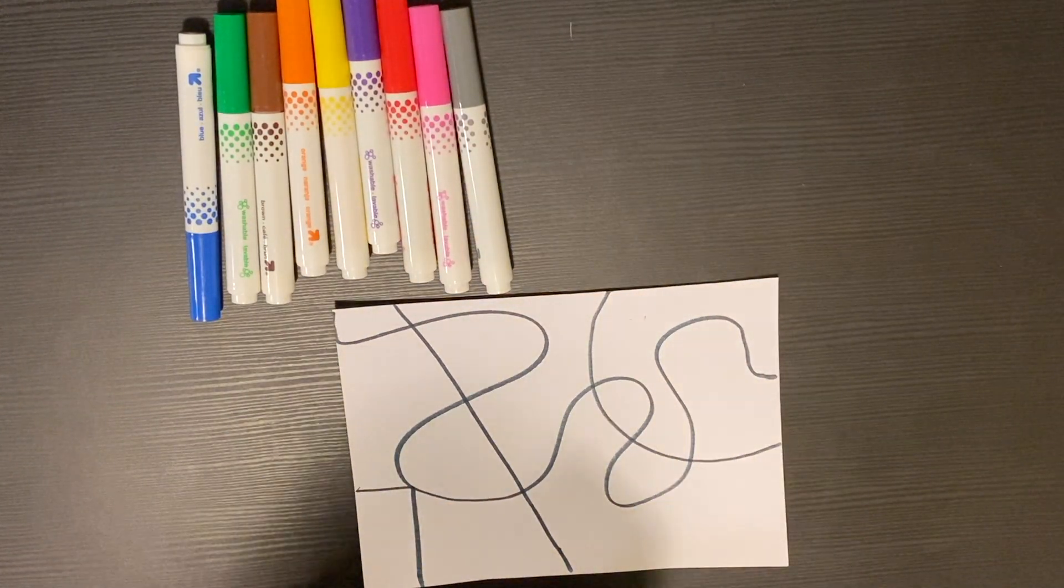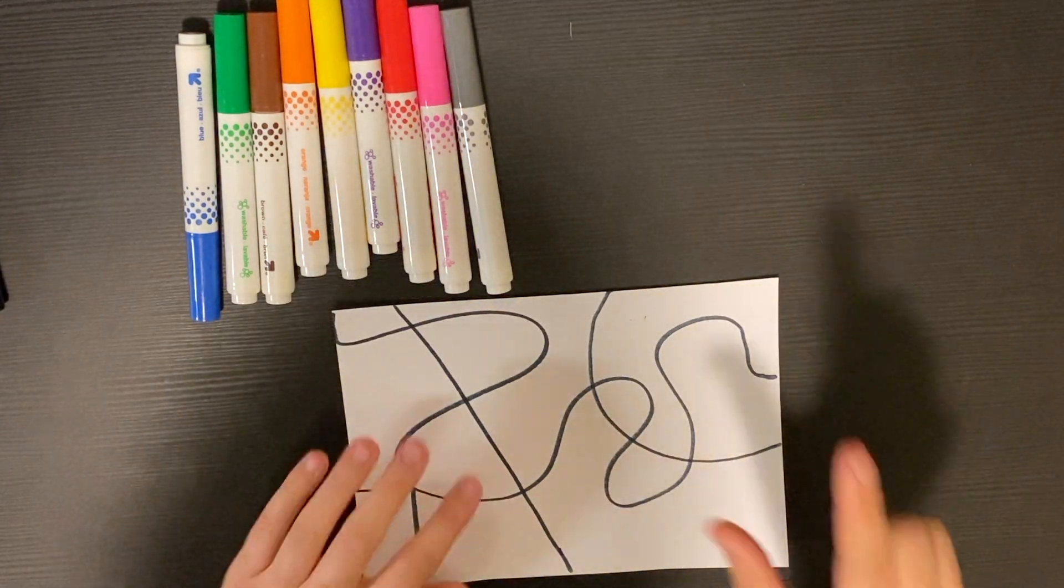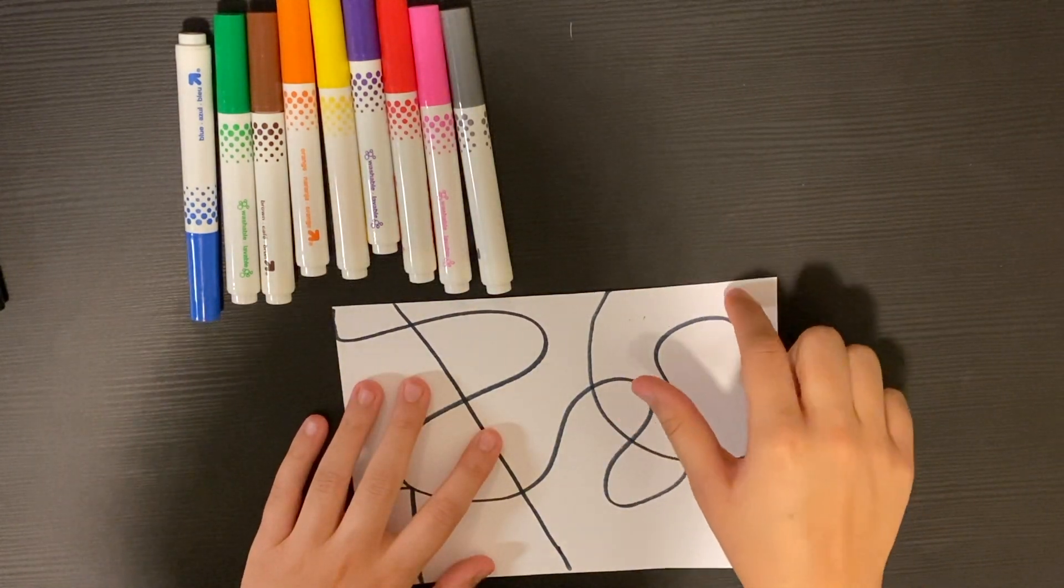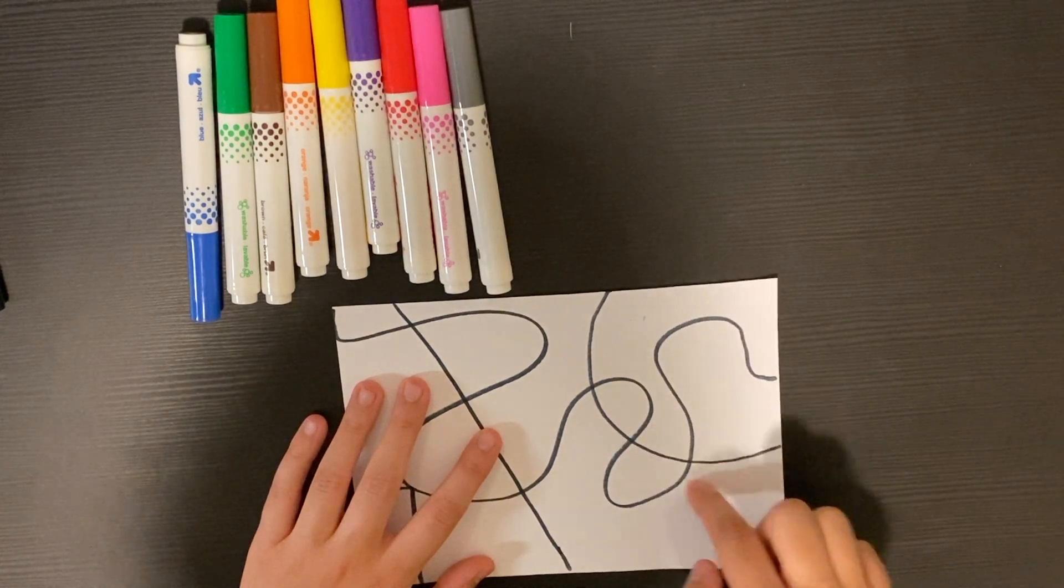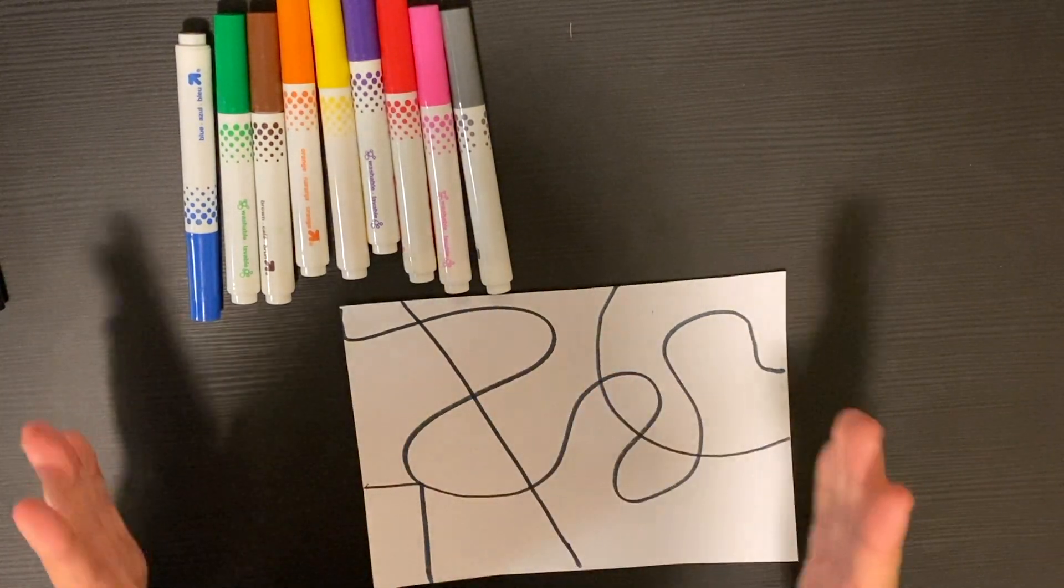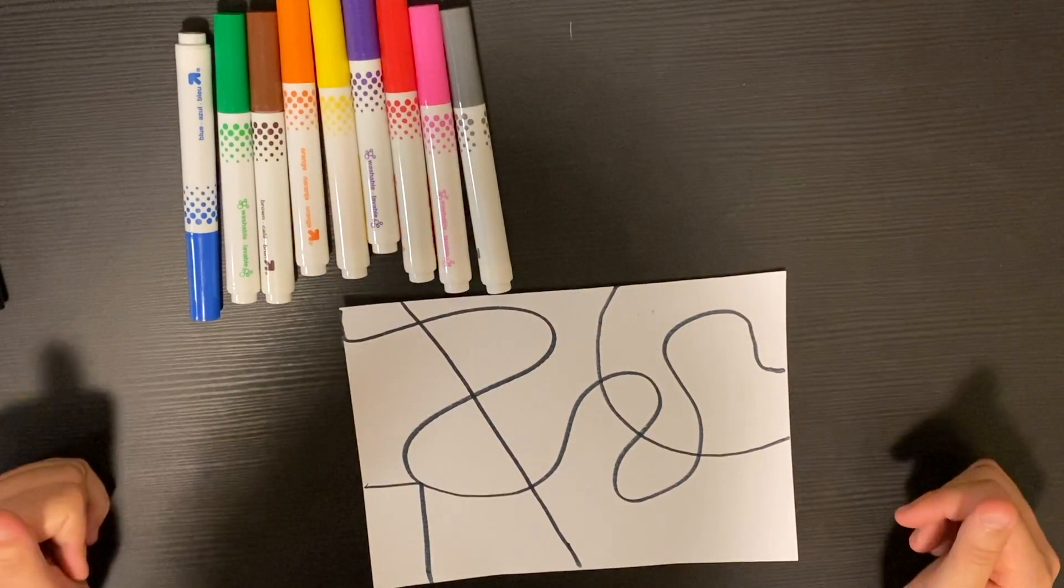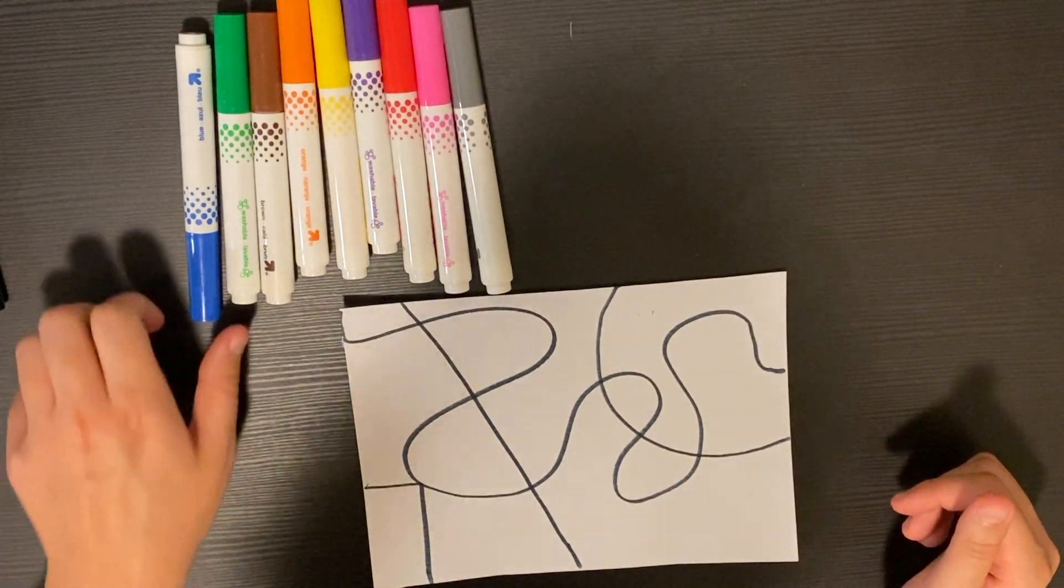Now you might be able to notice that from these lines intersecting or crossing over each other, we've created these spaces in between the lines. In these white spaces is where we're going to take all of our other markers and doodle or Zentangle. And it's going to look really cool when we're all finished.